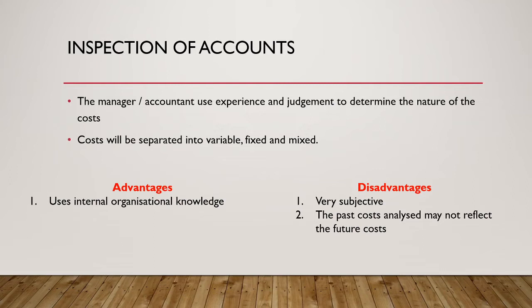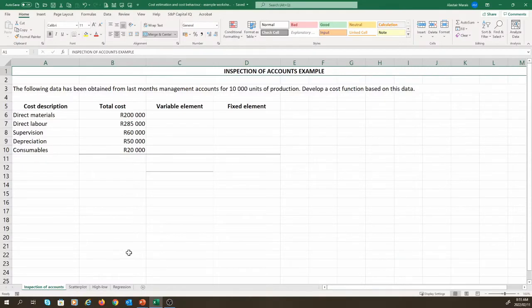Let us now consider a short example for inspection of accounts. We are going to do this example in Excel, as it is important that we start developing our skills with information technology. In this example, we have extracted some data from last month's management accounts, in which 10,000 units were produced. We now need to develop a cost function. Looking at the data, we see we have direct materials, direct labor, supervision, depreciation, and consumables. Our first step is to use our judgment to classify these costs as either fixed, variable, or mixed.